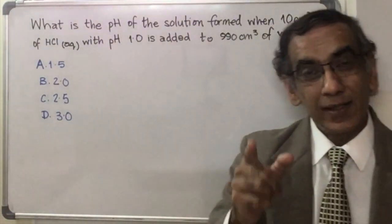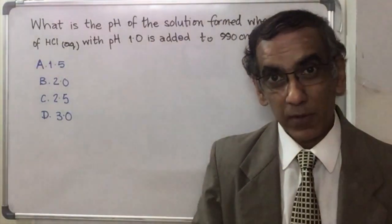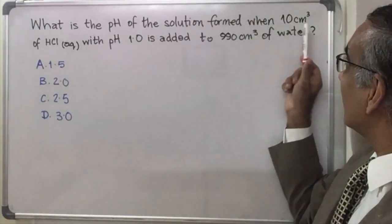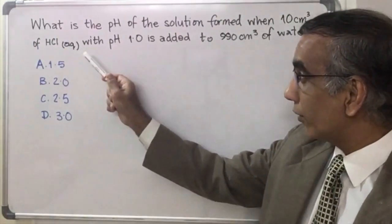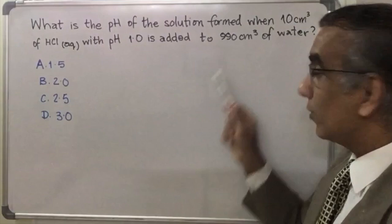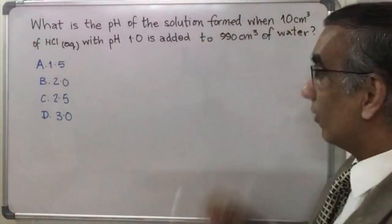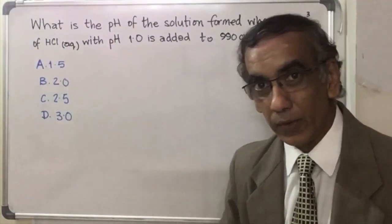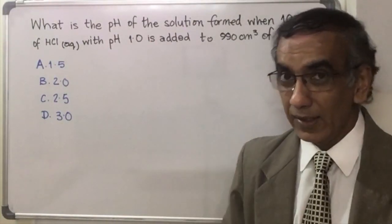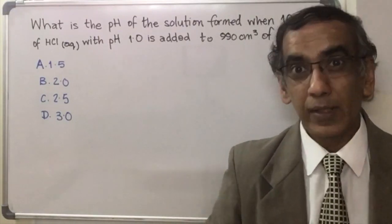Hello and welcome again as we consider yet another multiple-choice question for IB chemistry. What is the pH of the solution formed when 10 cm³ of hydrochloric acid with pH 1.0 is added to 990 cm³ of water? Although this question is just two lines, there are several layers that you must peel back before you can arrive at the answer.